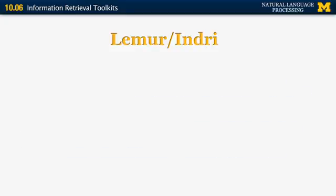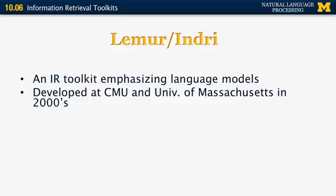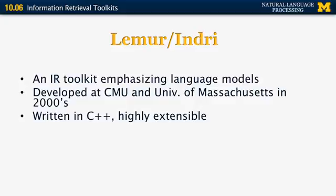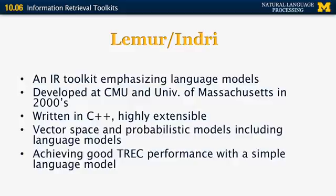More recently, systems called LEMUR and INDRI, based on language model-based information retrieval, have been developed. They're written in C++ and are highly extensible. They're based on both vector space and probabilistic models and have also achieved very good TREC performance.